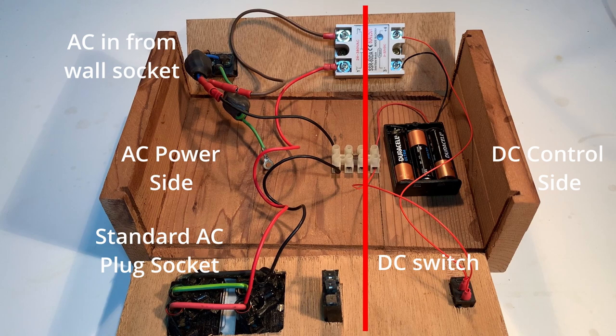The circuit has a DC control side, with DC negative connected to SSR terminal 3 with the black wire from the battery, and then SSR terminal 4 via the red wire going through a switch, and then to the positive terminal of the battery.